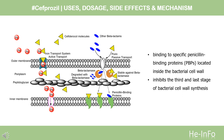Mechanism of Action: Cefprozil, like the penicillins, is a beta-lactam antibiotic. By binding to specific penicillin-binding proteins (PBPs) located inside the bacterial cell wall, it inhibits the third and last stage of bacterial cell wall synthesis. Cell lysis is then mediated by bacterial cell wall autolytic enzymes such as autolysins. It is possible that Cefprozil also interferes with an autolysin inhibitor.